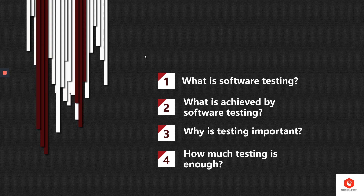We have two methods of software testing: manual software testing and automation software testing. What is achieved by software testing? Certainly better product quality is achieved, and that leads to a better product being delivered to a customer, a more satisfied customer, and greater benefit to the entire company.